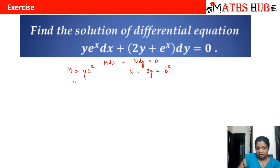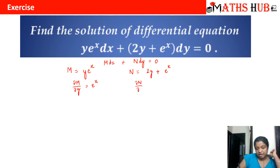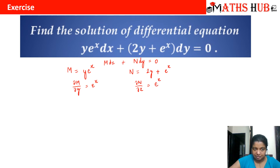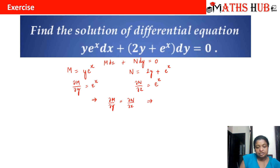Let us first check whether it is exact or not. The derivative of M with respect to y is e^x. The derivative of N with respect to x: the derivative of 2y is 0, and the derivative of e^x is e^x. So ∂M/∂y equals ∂N/∂x, and hence the given differential equation is exact.